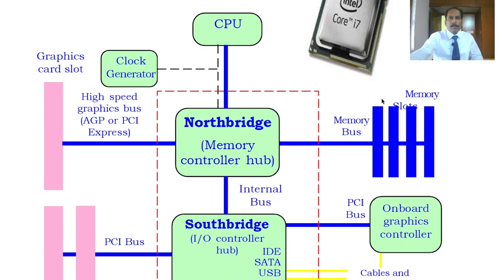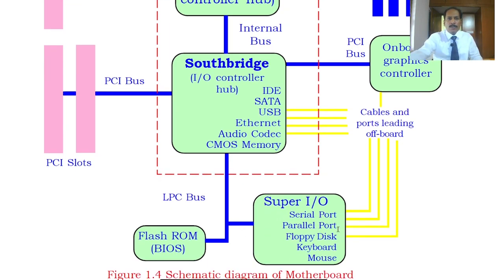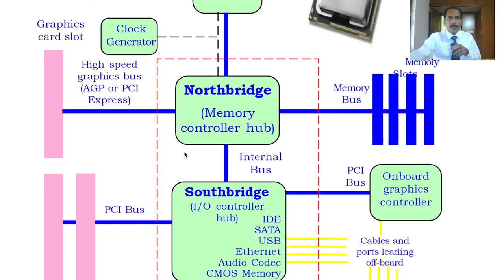You can see here that the graphic card, memory slots — RAM — memory controller, AGP high-speed graphics, and the CPU are all connected in the North Bridge. The CPU is a very high-speed device, and to cope with the CPU speed, the main memory RAM is also a fast device — so they are put together. In the South Bridge we have IDE for secondary storage devices, SATA — serial advanced technology attachment — USB ports, Ethernet, audio, CMOS battery, serial ports, parallel ports, floppy disk, hard disk, and keyboard — all slow devices are connected here.